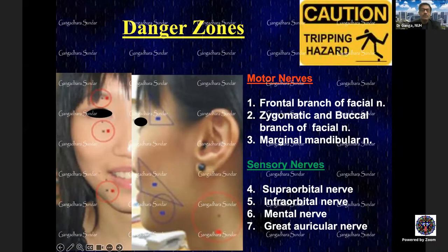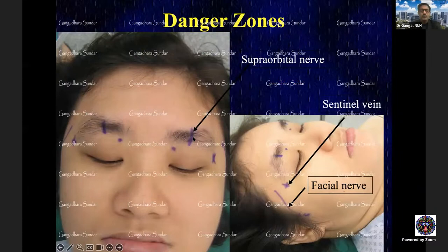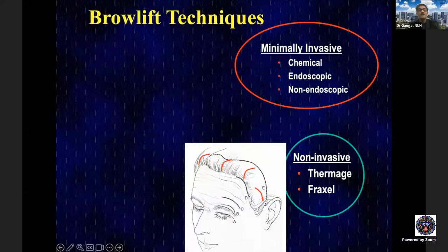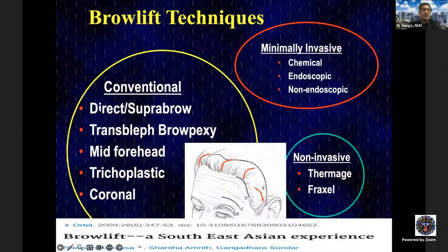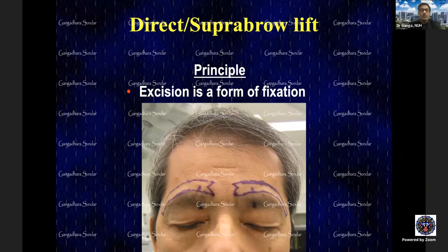Markings are made on the face to identify danger zones before dissection, with endoscopic or open guidance to protect sensory and motor branches. The most common brow lift procedure performed is the direct brow lift, done under local anesthesia in 45 minutes, providing a one-to-one elevation. Their experience was published about 10 years ago. The direct brow lift is the workhorse of all brow lift procedures, ideal for patients with a tall forehead where scars can be hidden in wrinkles.